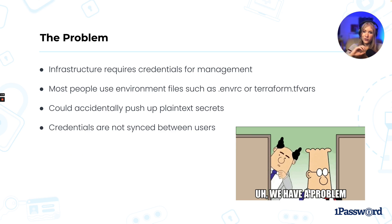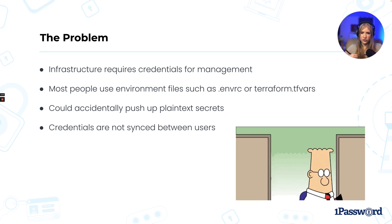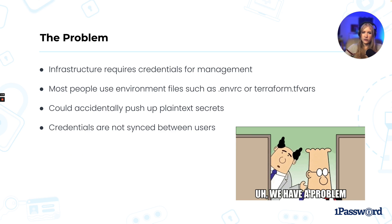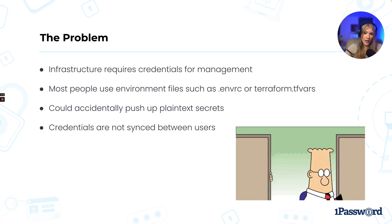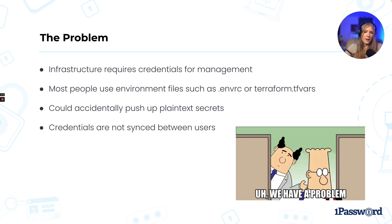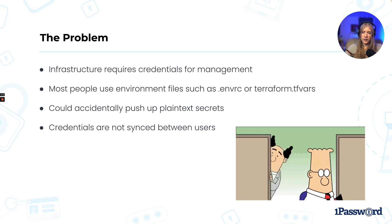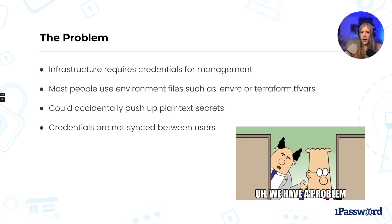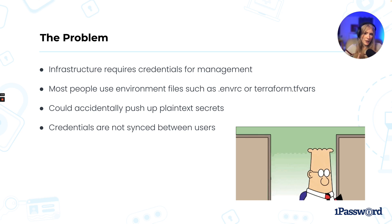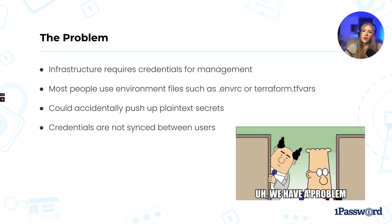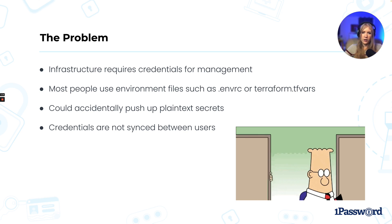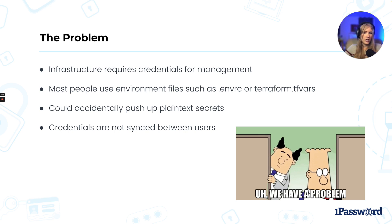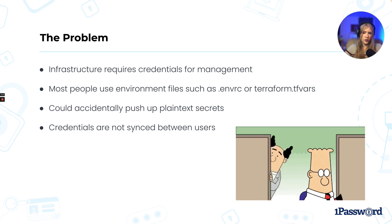When configuring infrastructure, you need a base set of credentials to access said infrastructure. But if we're making changes using our local machine, how can we get these credentials locally? Currently, most people use environment files with plain text passwords inside. Imagine this scenario: you've created a plain text environment file in order to make changes to your infrastructure using Terraform.